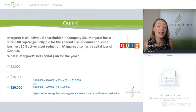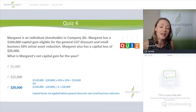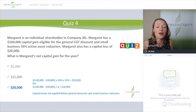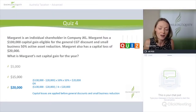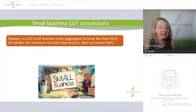Margaret's net capital gain is $20,000. First, we reduce the $100,000 gain by the capital loss of $20,000, giving a reduced gain of $80,000. We then apply both the general CGT discount at 50% and the 50% small business active asset reduction, bringing the net capital gain to $20,000. Alternatively, you could divide the gain after losses by four to get the same answer. The key point: always apply net capital losses first — many candidates make the mistake of forgetting to apply those capital losses.